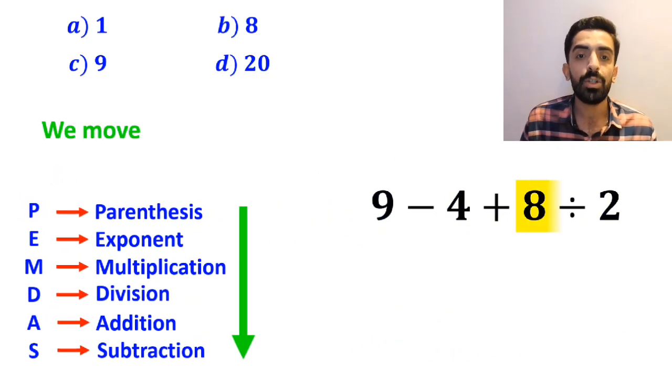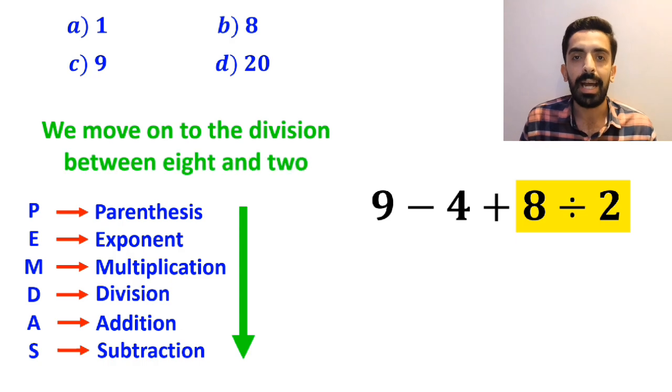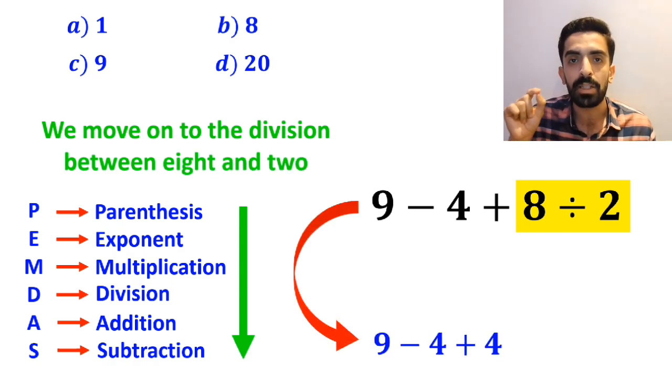In the next step, we move on to the division between 8 and 2, and replace this expression with 9 minus 4 plus 4.